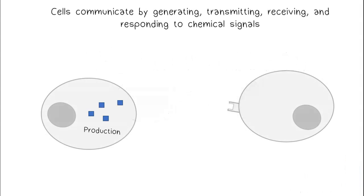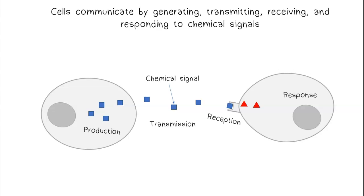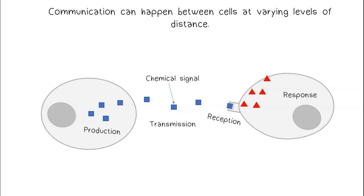Cells communicate by generating, transmitting, receiving, and responding to chemical signals. Communication can happen between cells at varying levels of distance.